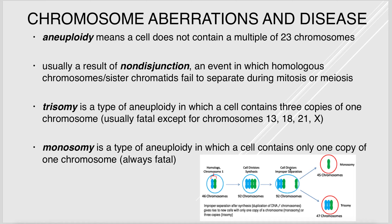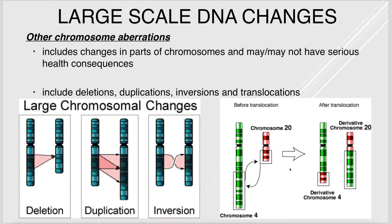Monosomy is when a cell has only one copy of a particular chromosome, and is almost always fatal — with the exception of Turner syndrome. Large-scale chromosomal aberrations can also occur: big deletions, duplications, inversions, and translocations where pieces of chromosomes swap places.